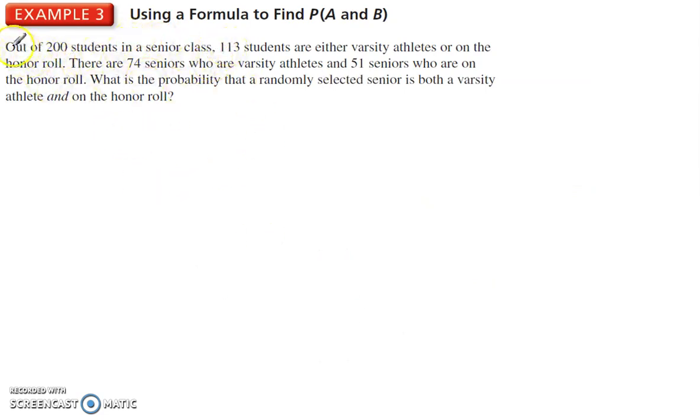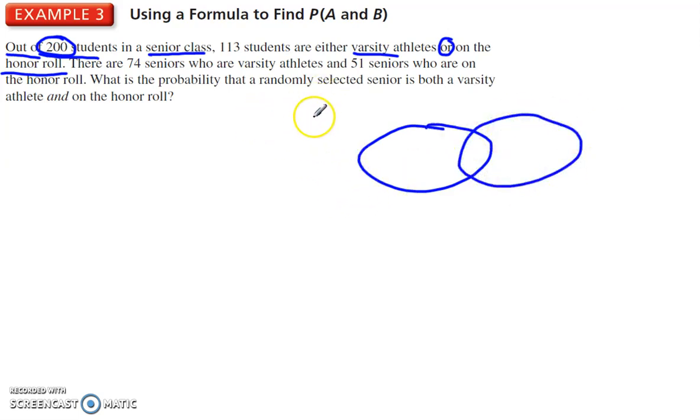Alright, then here we have a problem, which I know a lot of you don't like reading a lot of words. Just read through, see what's the important information. We have 200 students out of 200. Okay, so total is 200 in a senior class. 113 are either varsity or on the honor roll. Okay, so we can say, alright, so out of the total 200, we have 113 that are in these two groups, either varsity or on the honor roll.